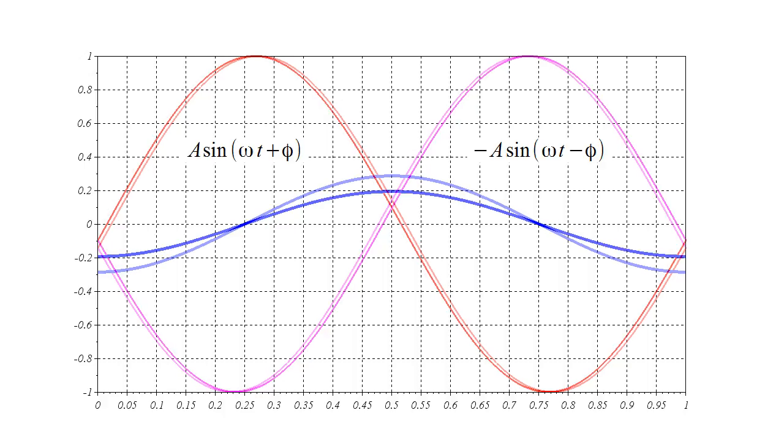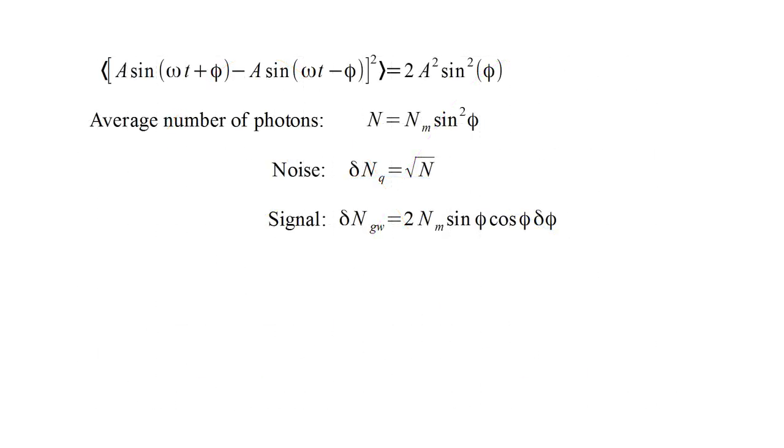The signal we must detect in the presence of quantum noise is the small change in optical intensity due to small changes in the path lengths of the interferometer arms. These manifest as small changes in the phase phi. That signal, denoted by delta n sub g w, is proportional to the phase change delta phi. Delta phi, in turn, is proportional to the change in proper length of the interferometer arms, delta sigma, divided by the optical wavelength, lambda.